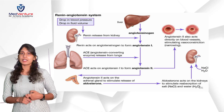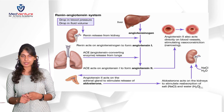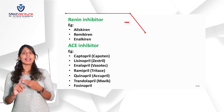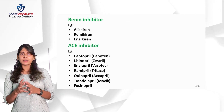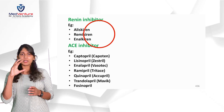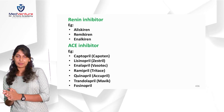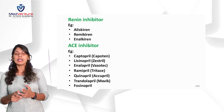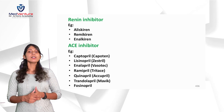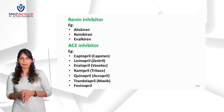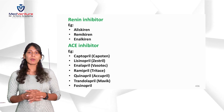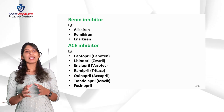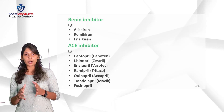We are mainly discussing renin inhibitors and ACE inhibitors. Renin inhibitor examples are aliskiren, remikiren, and enalkiren — all ending in '-kiren,' which is how you remember them. ACE inhibitors all end in '-pril': captopril, lisinopril, enalapril, ramipril, trandolapril, fosinopril, and quinapril. Also remember: all ACE inhibitors except captopril and lisinopril are prodrugs — they must be metabolized into their active form to exert their action.